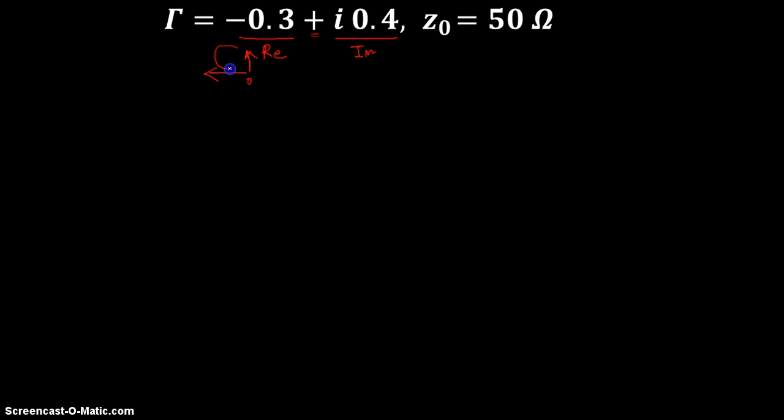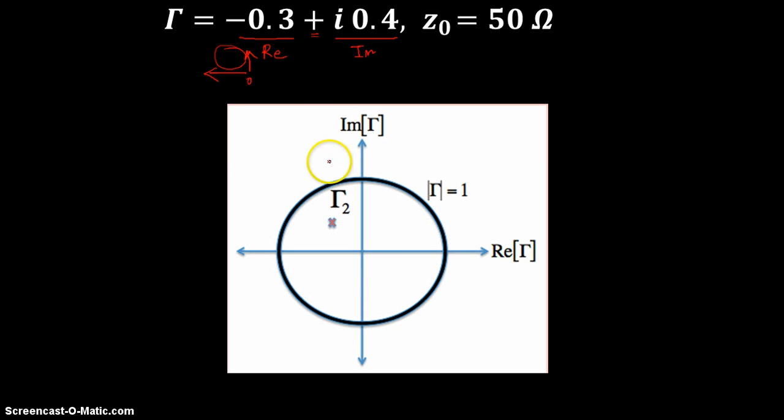So combining these two it should be on the left quadrant and your value falls with a negative 0.3 that might come over here and a positive 0.4. So this is 0.4 of the imaginary part and the intersecting value comes here.